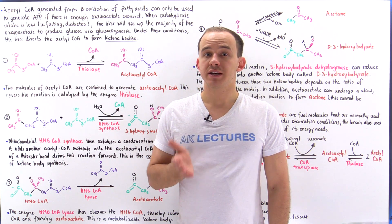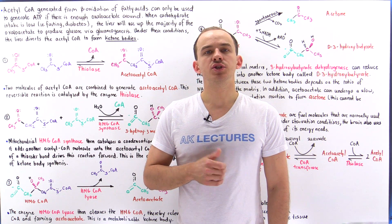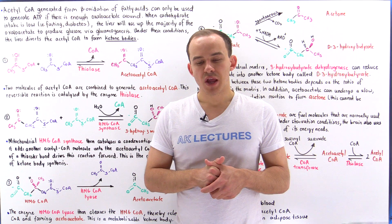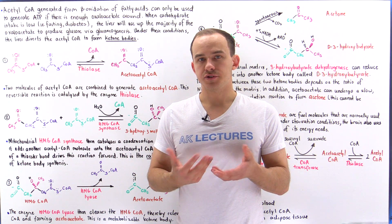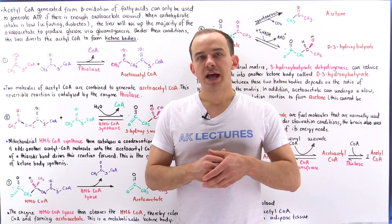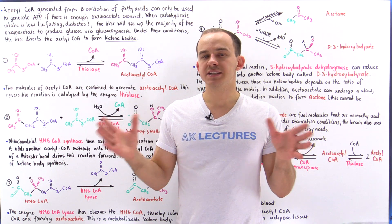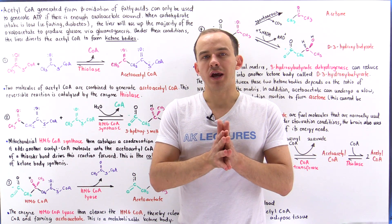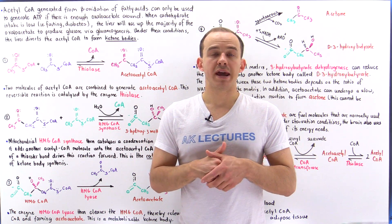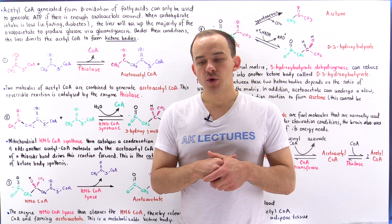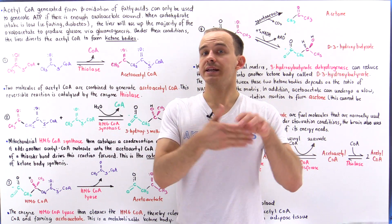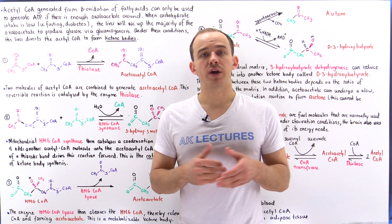The cells of our body can break down and oxidize fatty acids into acetyl coenzyme A molecules. What happens to these acetyl coenzyme A molecules next depends on the conditions inside our cells. If we have high levels of oxaloacetate inside the cell, then the oxaloacetate can be combined with acetyl coenzyme A to generate an intermediate of the citric acid cycle, which can ultimately be used to help form ATP molecules.